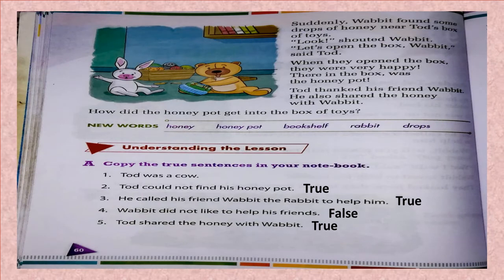Suddenly, Wobbit found some drops of honey near Todd's box of toys. Look! shouted Wobbit. Let's open the box, said Todd. When they opened the box, they were very happy. There in the box was the honey pot. Todd thanked his friend Wobbit and also shared the honey with Wobbit.